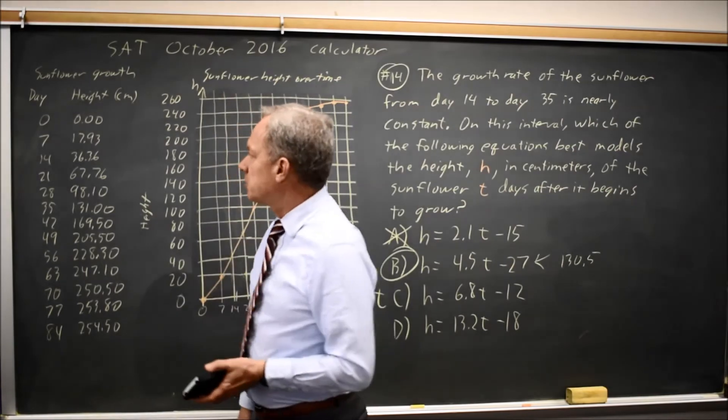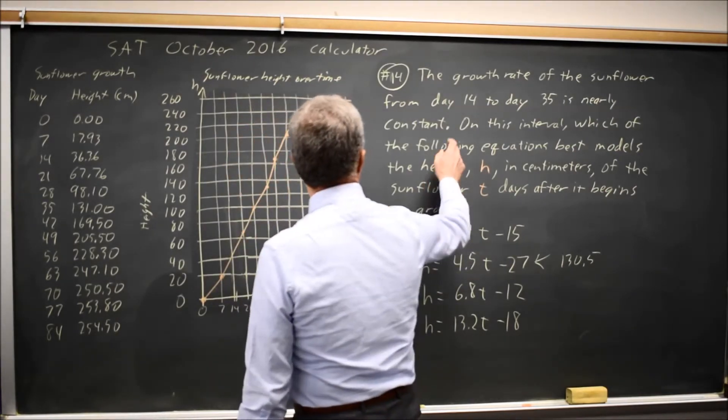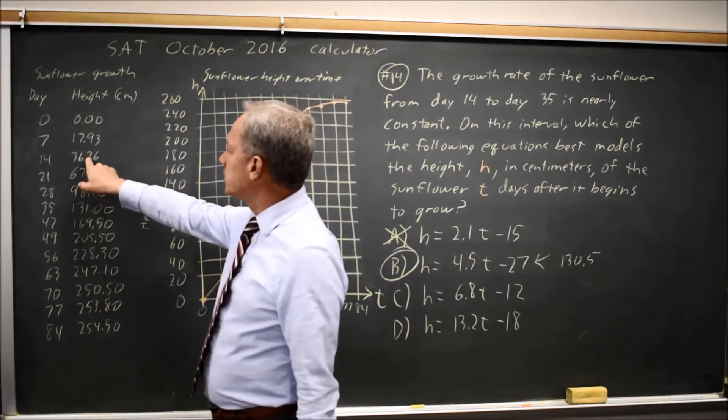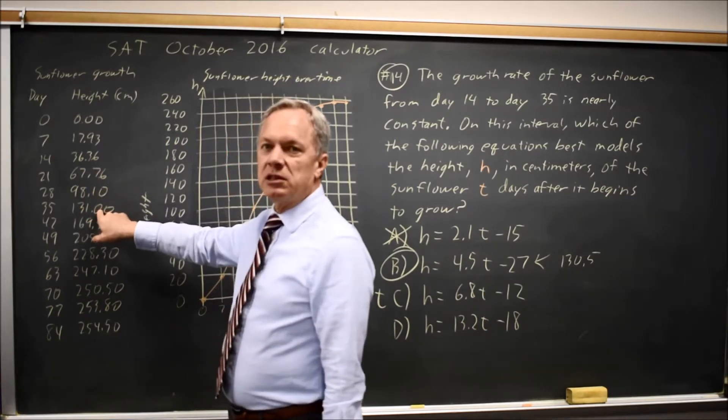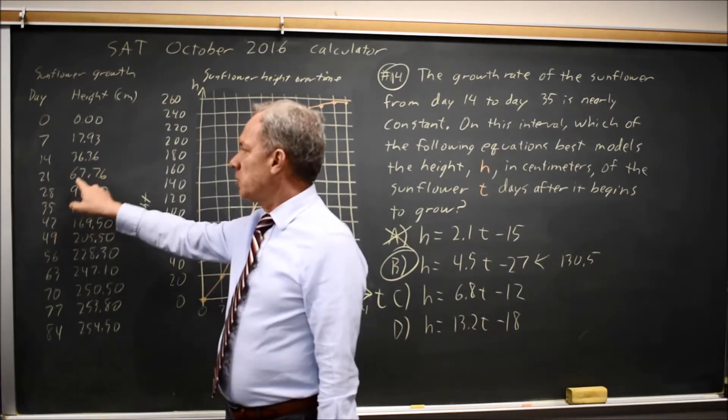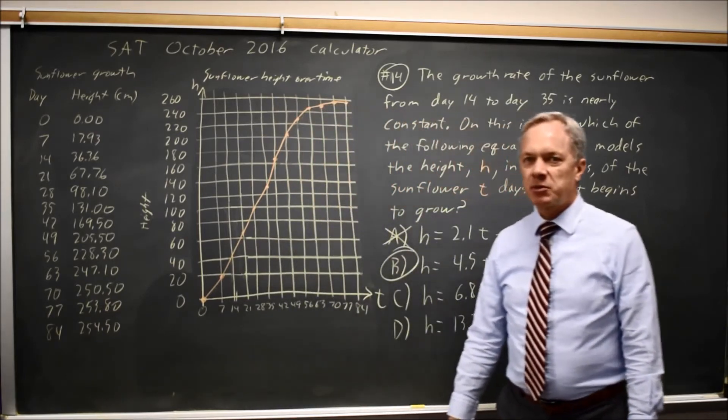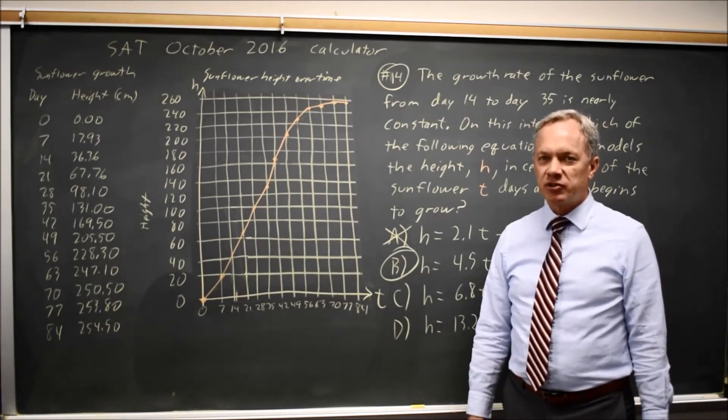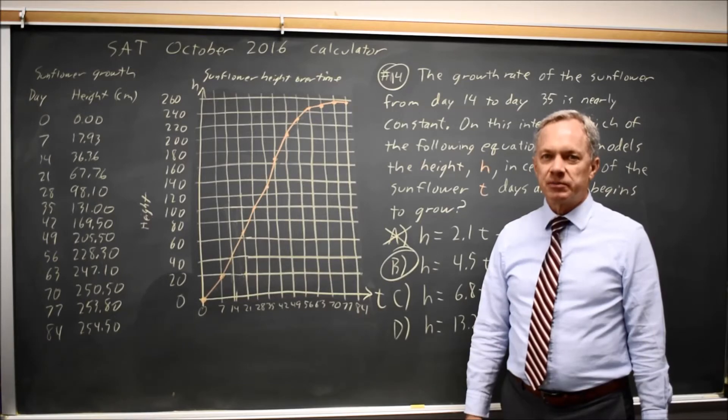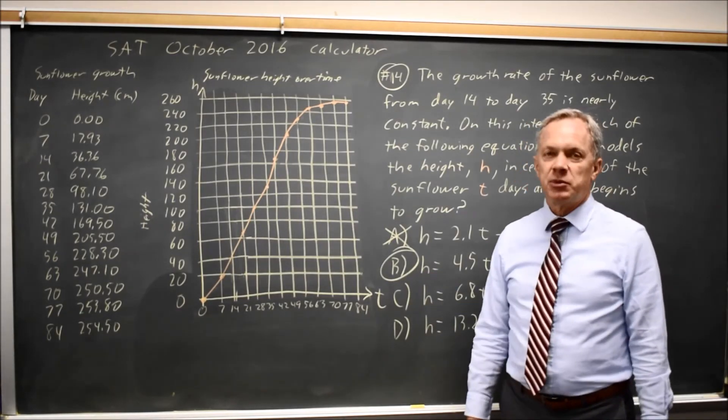since this is on the graphing calculator, is I can take my heights from days 14 to 35, these four values, put the day in list 1, the height in list 2, and use linear regression. I'm going to skip that option because it seems like the least efficient, but it would work also. And that would probably give me an answer very close to choice B.